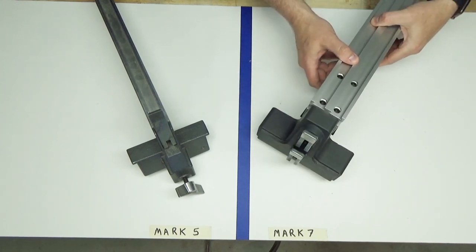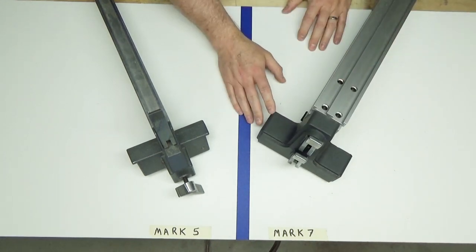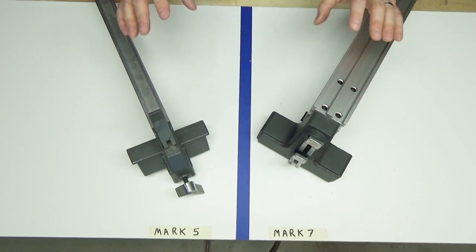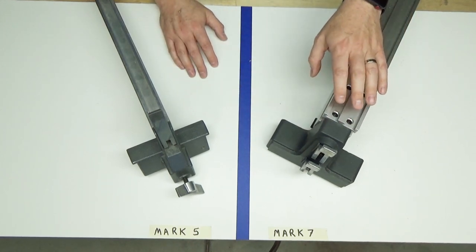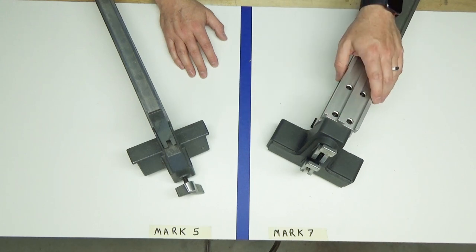But I will give a slight advantage to the Mark VII rip fence. Not necessarily because of the rip fence itself but because of the table system and how well the auxiliary tables align with the main table including the magnetic strip and some of those other features.